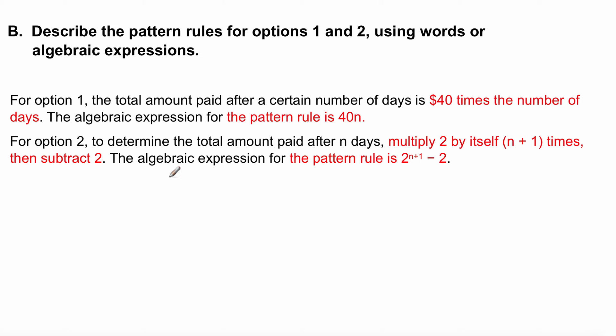So for the next question that you're being asked is to describe the pattern rules for options one and two using words or algebraic expression. This is what I'm looking for. For option one, the total amount paid after a certain number of days is 40 times the number of days. So, your pattern rule is going to be 40N. 40 times the number of days. And I'll go through it in another couple of slides.